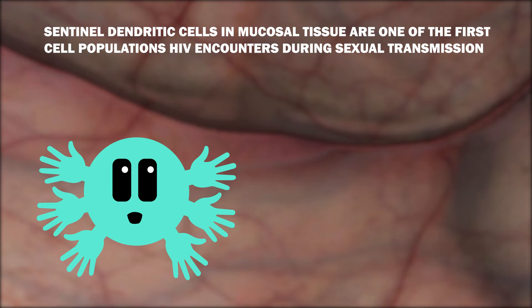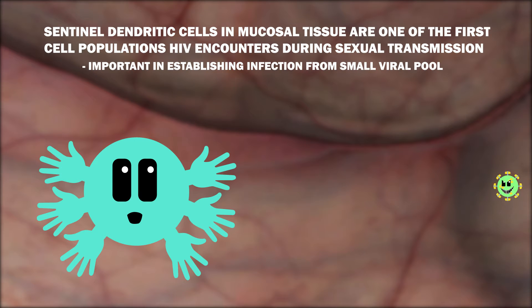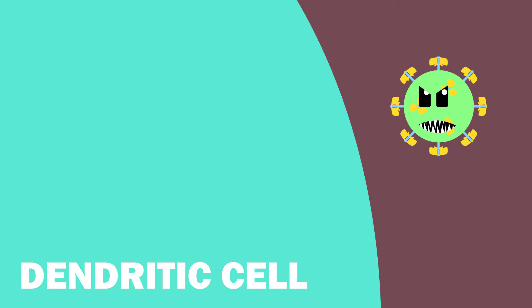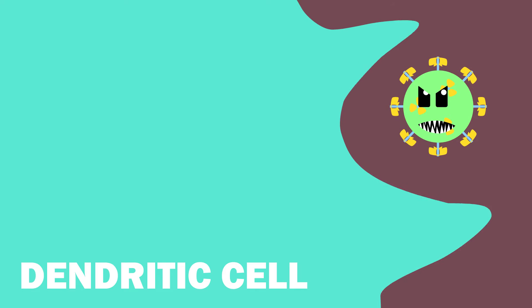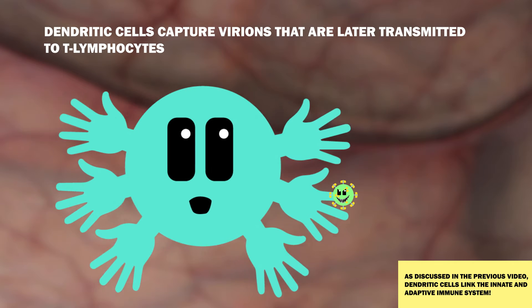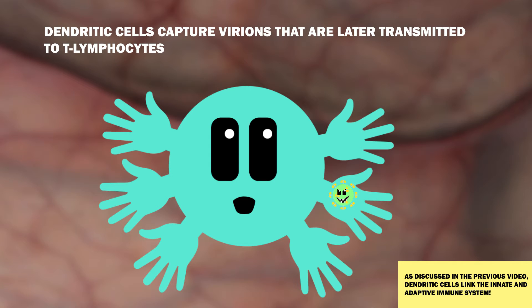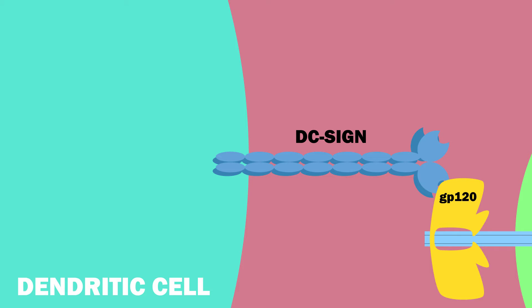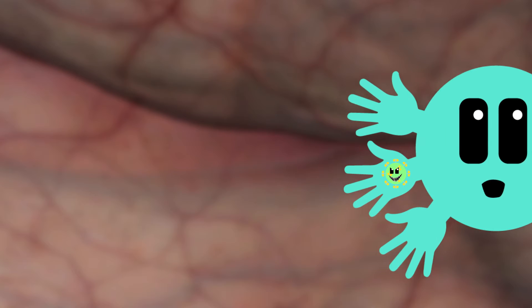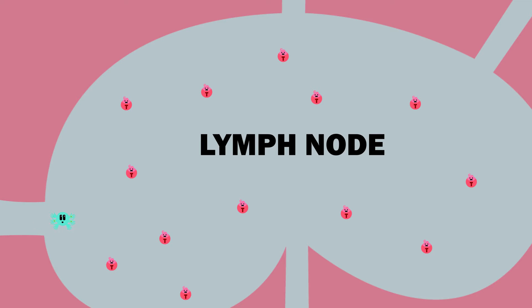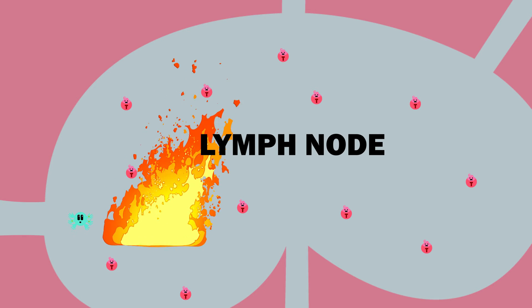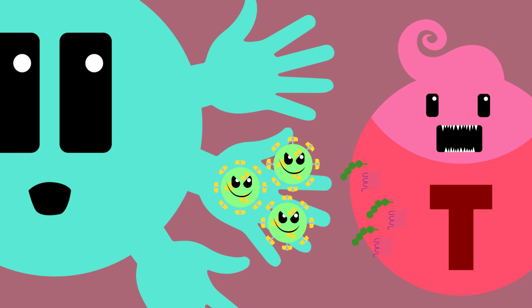Sentinel dendritic cells in mucosal tissue are one of the first cell populations that HIV encounters during sexual transmission, and are important in establishing a successful host infection from a small viral pool. HIV cannot productively infect dendritic cells, since they have low levels of the receptors HIV needs to enter, and HIV gets degraded if internalized. However, dendritic cells capture virions that are later transmitted to T-lymphocytes. HIV's GP120 sticks to the adhesion molecule DC-SIGN and other C-type lectin receptors on the surface of dendritic cells. The virus is carried around in deep folds in the dendritic cell's surface. Dendritic cells travel to the lymph nodes, where there are large numbers of T-cells — HIV's ideal target — and the HIV begins to spread rapidly.